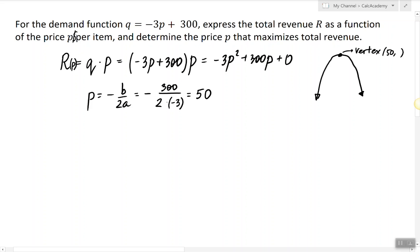So we can assume that the units are dollars. So the answer is the price that maximizes the revenue is 50 dollars per item because this is the p-coordinate of the vertex.